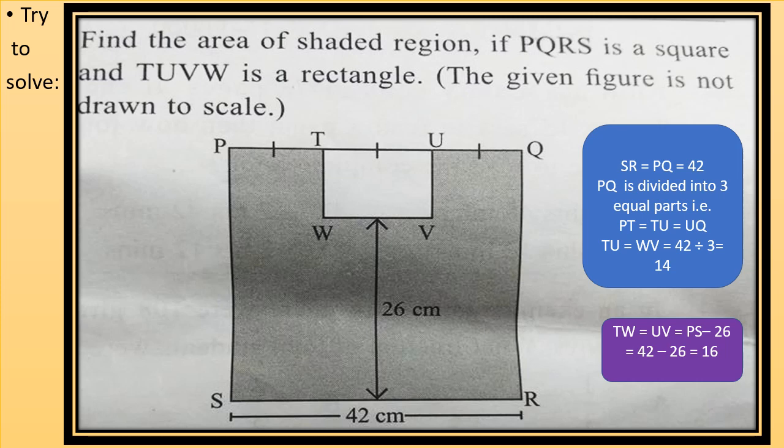Now we have to calculate TW. So TW will be PS minus 26 cm, which is gap given between the square and the rectangle. So TW equals to 42 minus 26 equals to 16. Now sides of rectangles are TW is 16 and TU is 14.